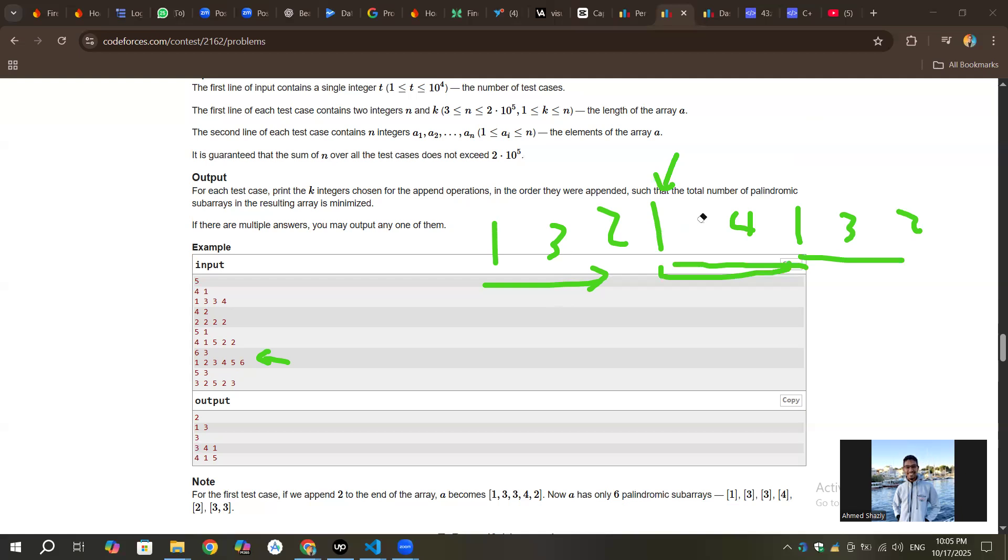So in this case, it will be 3, 2, 1. Last appearance is here, last appearance is here, last appearance is here. Now just loop again: 3, 2, 1. Now it's impossible to have any palindromes in this way. So yeah, literally that's the solution for this problem. It was a bit simple.